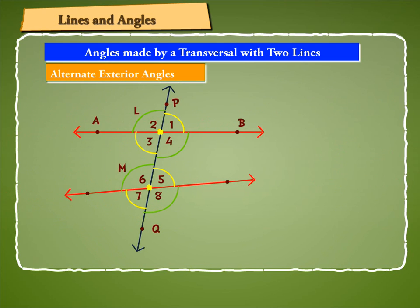In case we measure the pairs of corresponding angles, like in the figure on-screen, we shall see that they are not equal. The pairs of alternate angles 3 and 5, 4 and 6, 2 and 8, and 1 and 7 are also unequal. Similarly, the sum of interior or exterior angles on the same side of the transversal — 4 and 5, or 3 and 6, or 2 and 7, or 1 and 8 — is not 180 degrees.